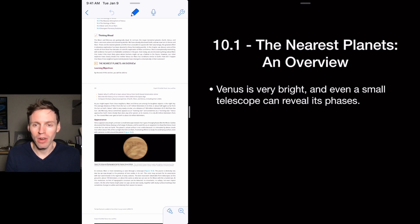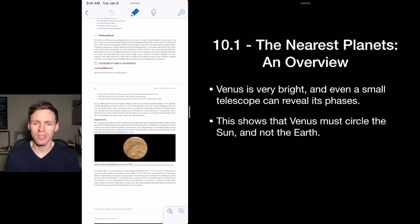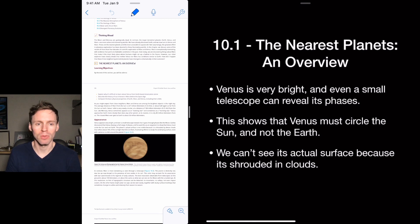Venus is bright, very bright. Even with a small telescope, you can see the phases of Venus, just like the phases of the Moon. And it shows that Venus must orbit the Sun and not the Earth. And that was the evidence that Galileo and Copernicus had to work with for the Galileo especially, for the Copernican Revolution.